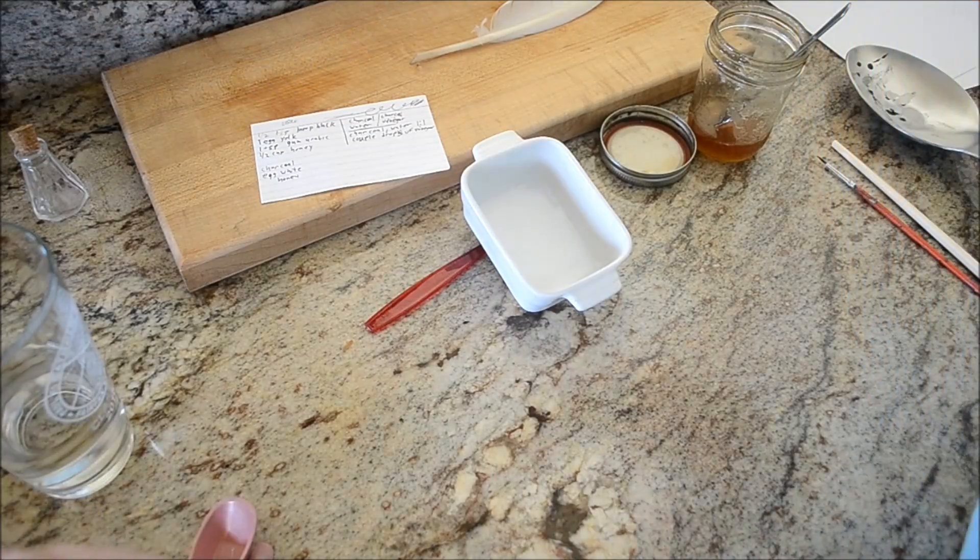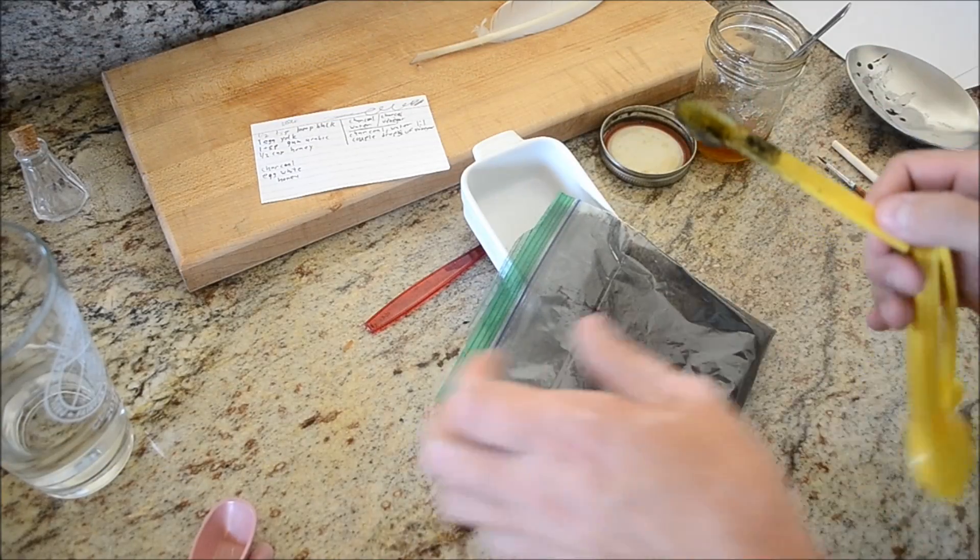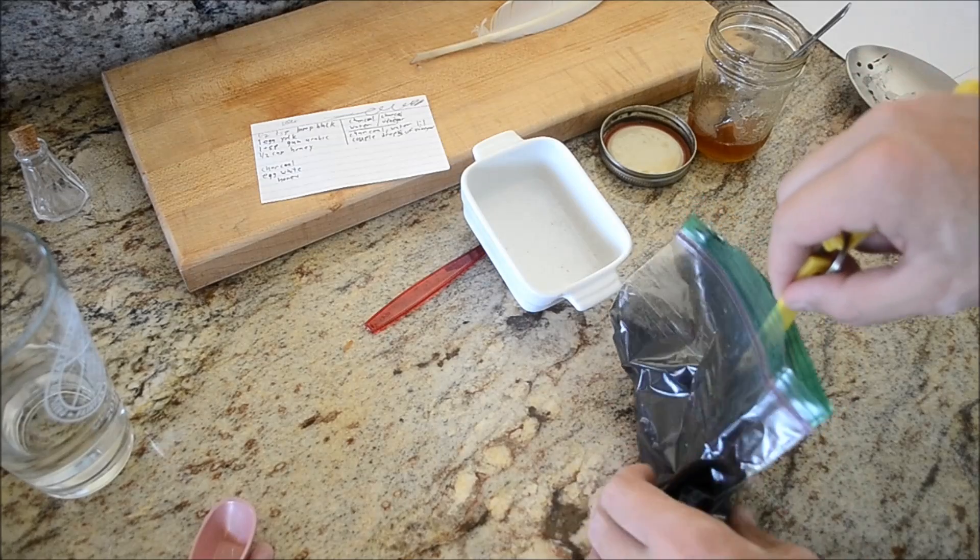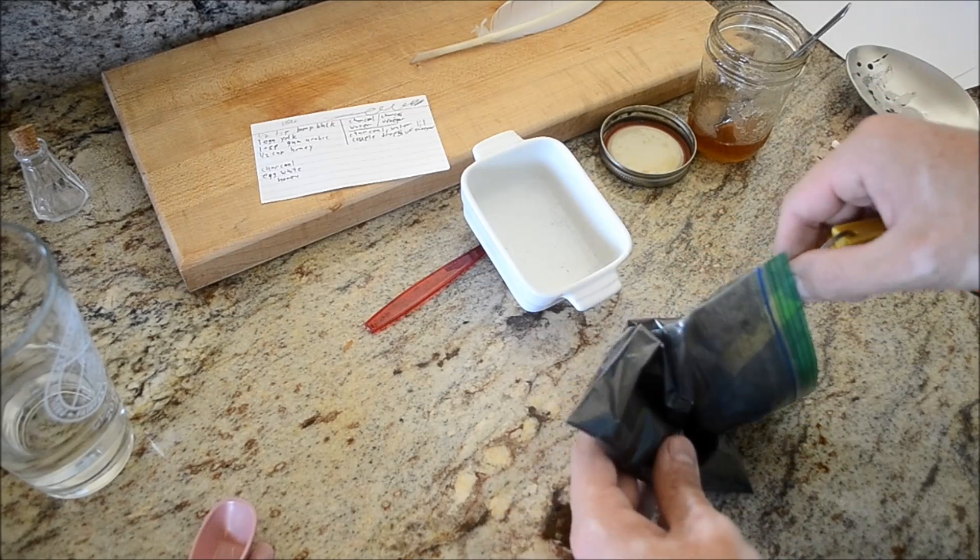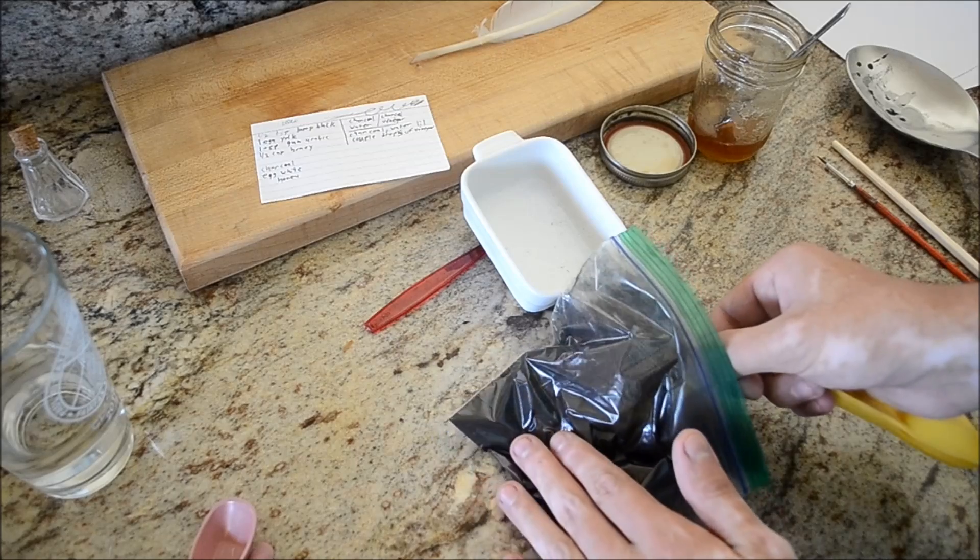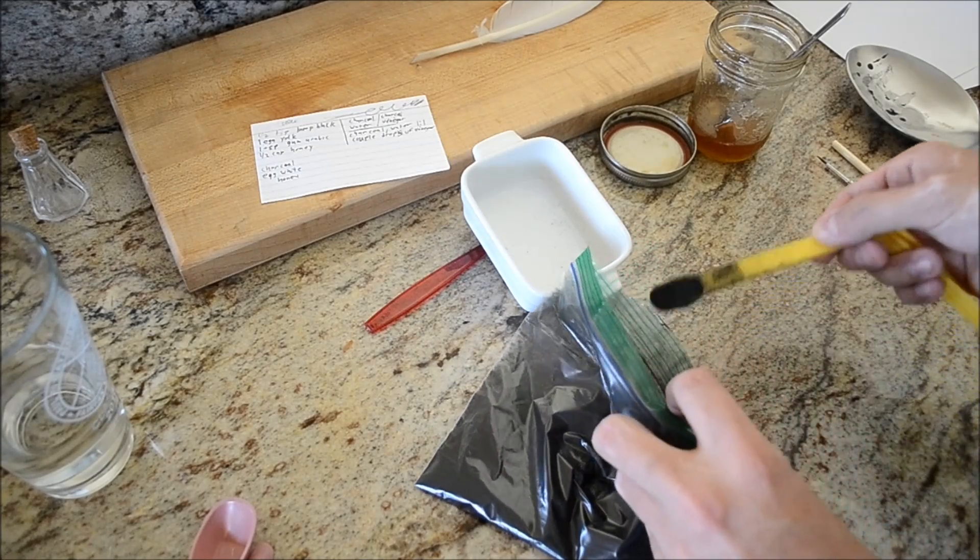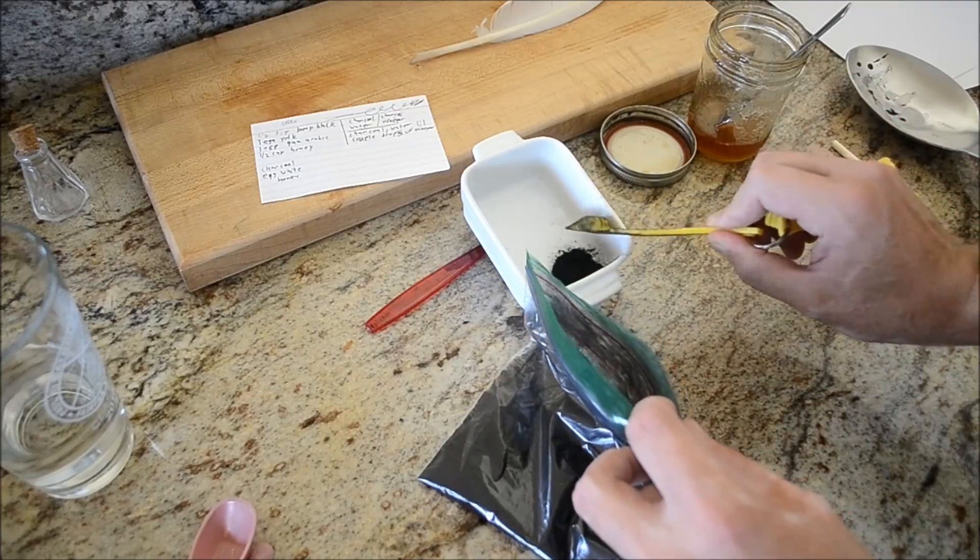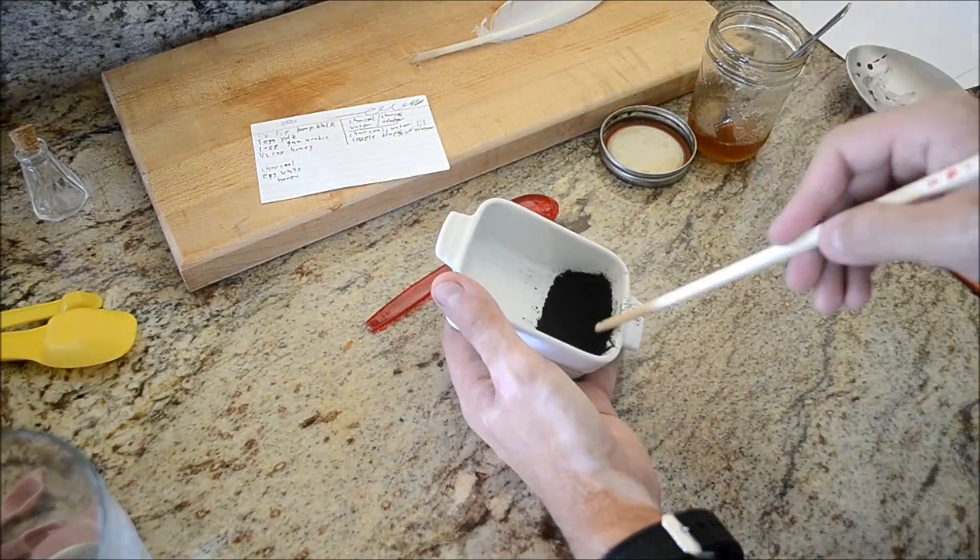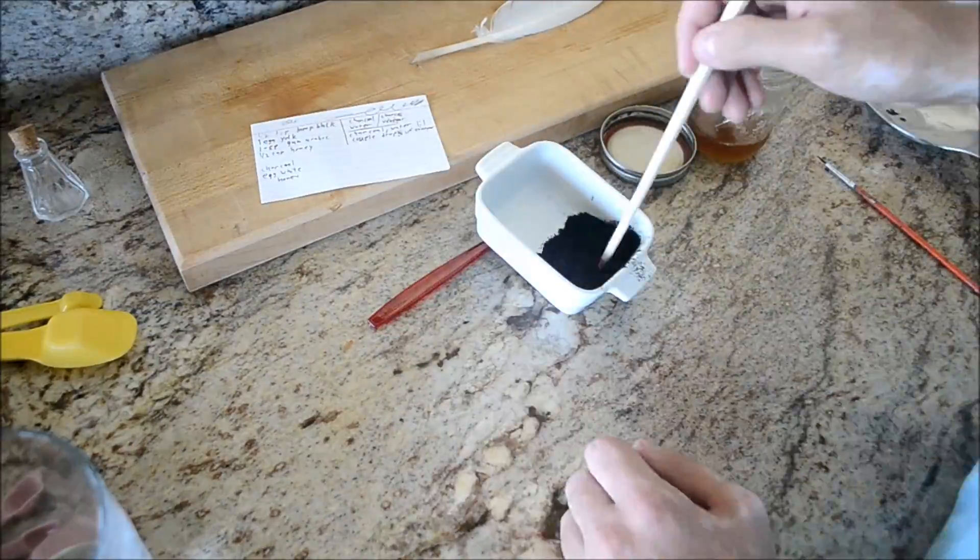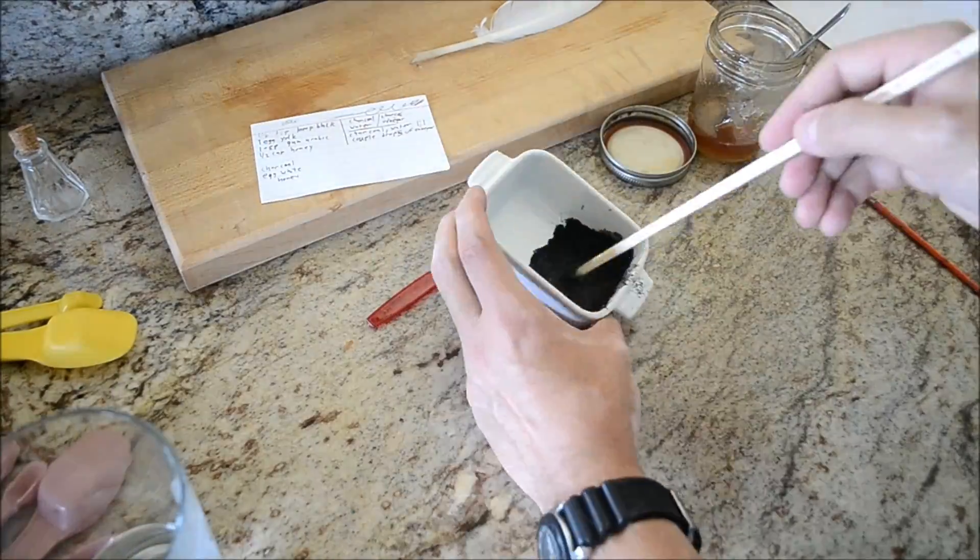All right, for this next recipe I'm just going to use charcoal and water, and see if that works. If it's too thin I'll add some honey, because that works really well with the vinegar, adding the honey.